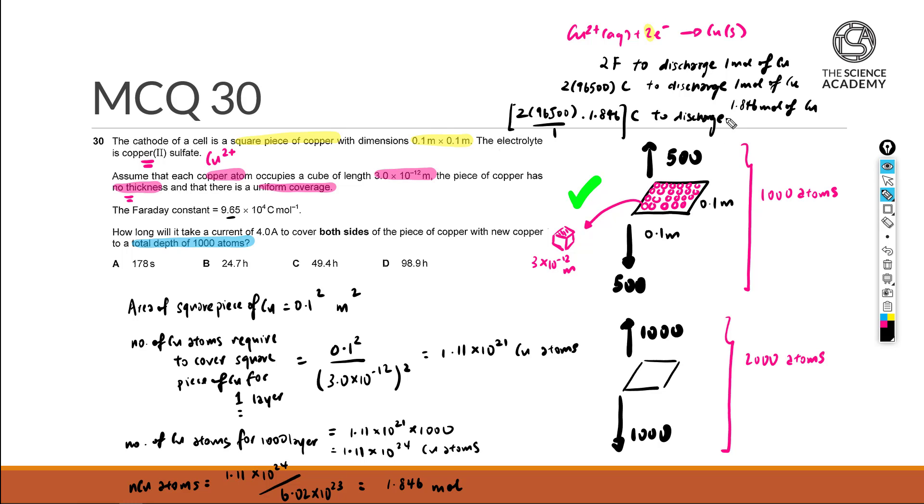So once we manage to get this net charge, we're going to now relate it back towards Q = It. Because the question wanted us to find out how long would it take for a current of 4 ampere for this particular event to happen. So for the case of Q now, it's going to be 2×96500 over 1 times 1.846 equals the current of 4 ampere times the time itself in seconds.